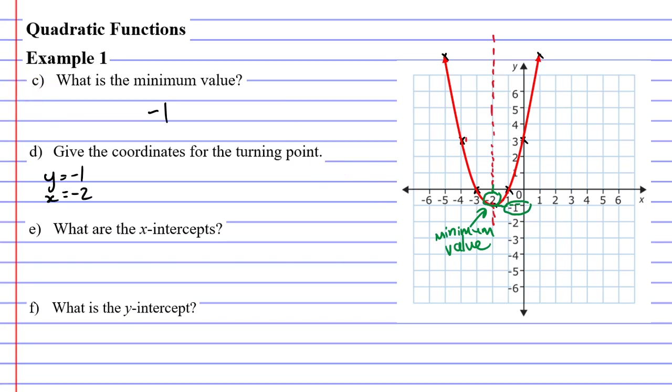Now, if we're going to give the coordinates of something, we have to write it in the form x, y. We know that x is negative 2 and y is negative 1. So this is the solution that you want to give for the turning point.